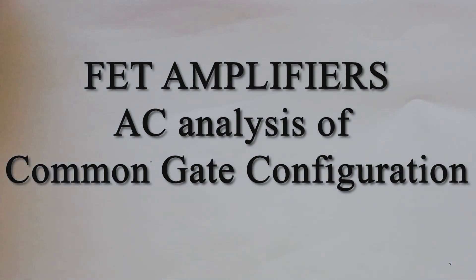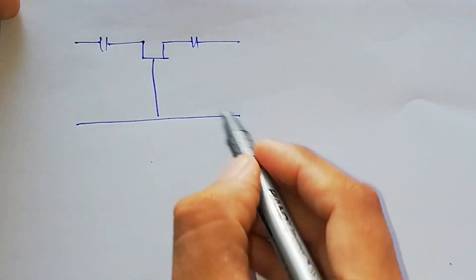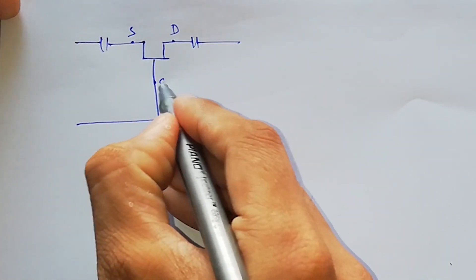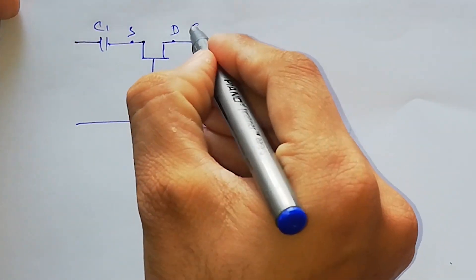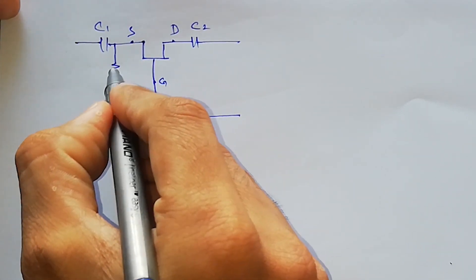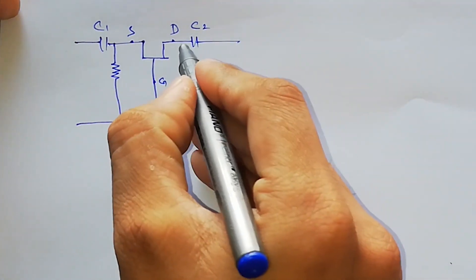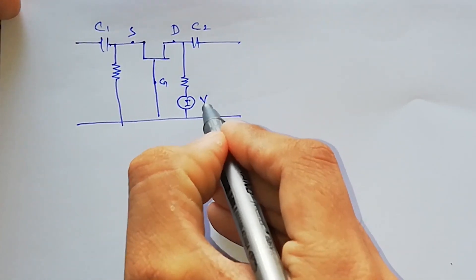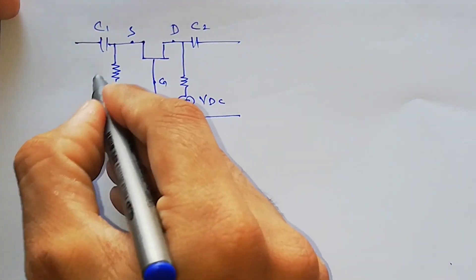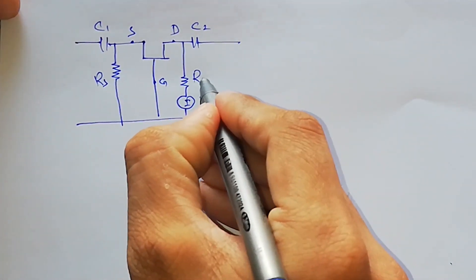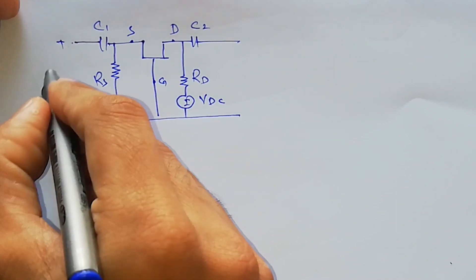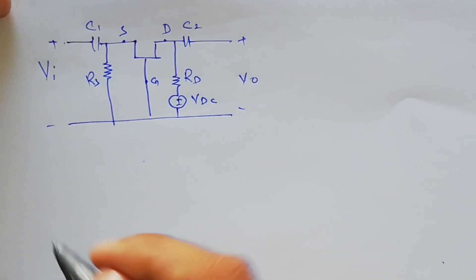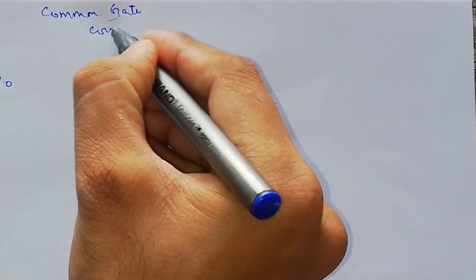Let's start by drawing the circuit. This is the source, drain, and gate. As we always have coupling capacitors, we have two resistances and a source here. This source provides VDD, while the resistances are called RS and RD. We have V-input here and V-output here. This is the common gate configuration.